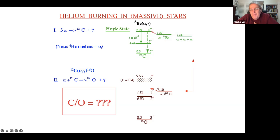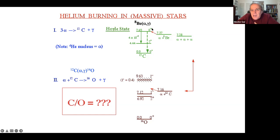We naturally call this the Hoyle state - the epitome of the anthropic principle. The laws of physics are finely tuned so we can exist to study them. We exist because this zero-plus state in carbon-12 exists. We now have large cross section resonance capture making carbon-12, not direct capture.